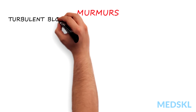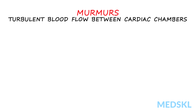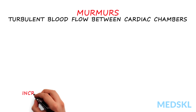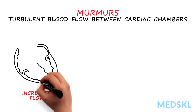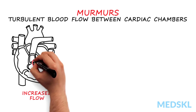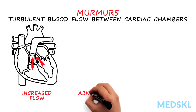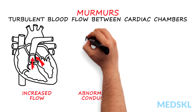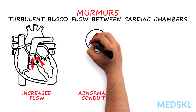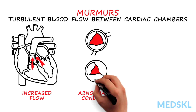Murmurs are caused by turbulent blood flow between cardiac chambers. Murmurs can result from one of three mechanisms, or any combination thereof. First, increased blood flow through a normal conduit — for example, increased stroke volume across the aortic or pulmonic valves in a pregnant woman. Second, murmurs can result from normal flow through an abnormal conduit, for example in aortic sclerosis or aortic stenosis.